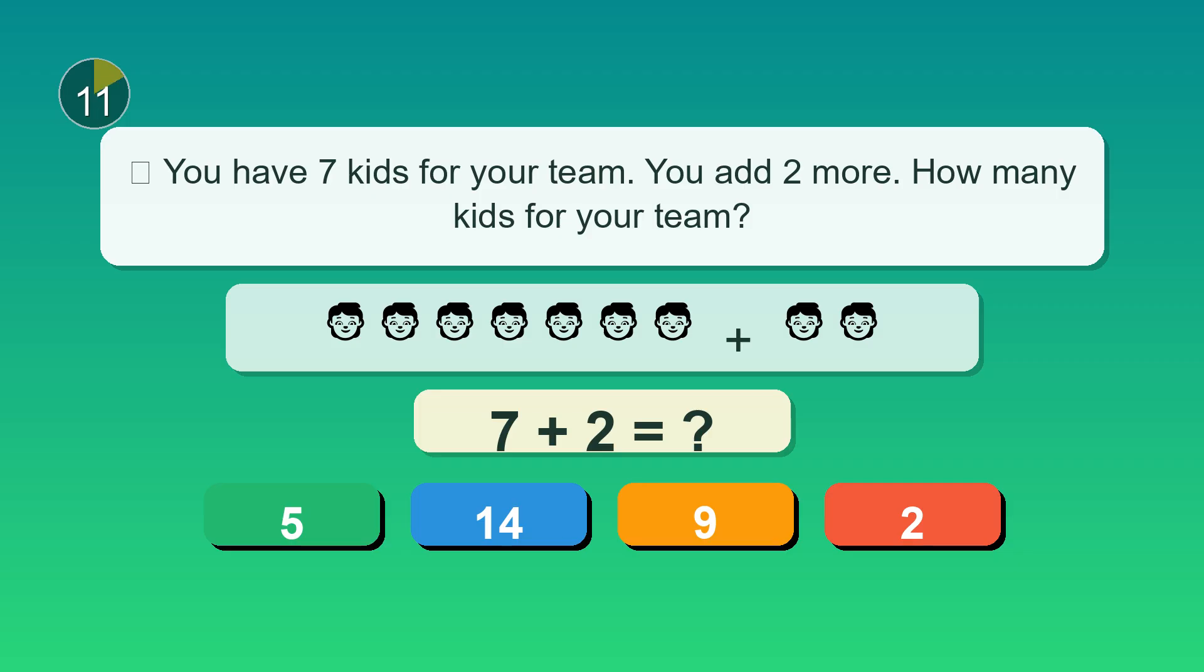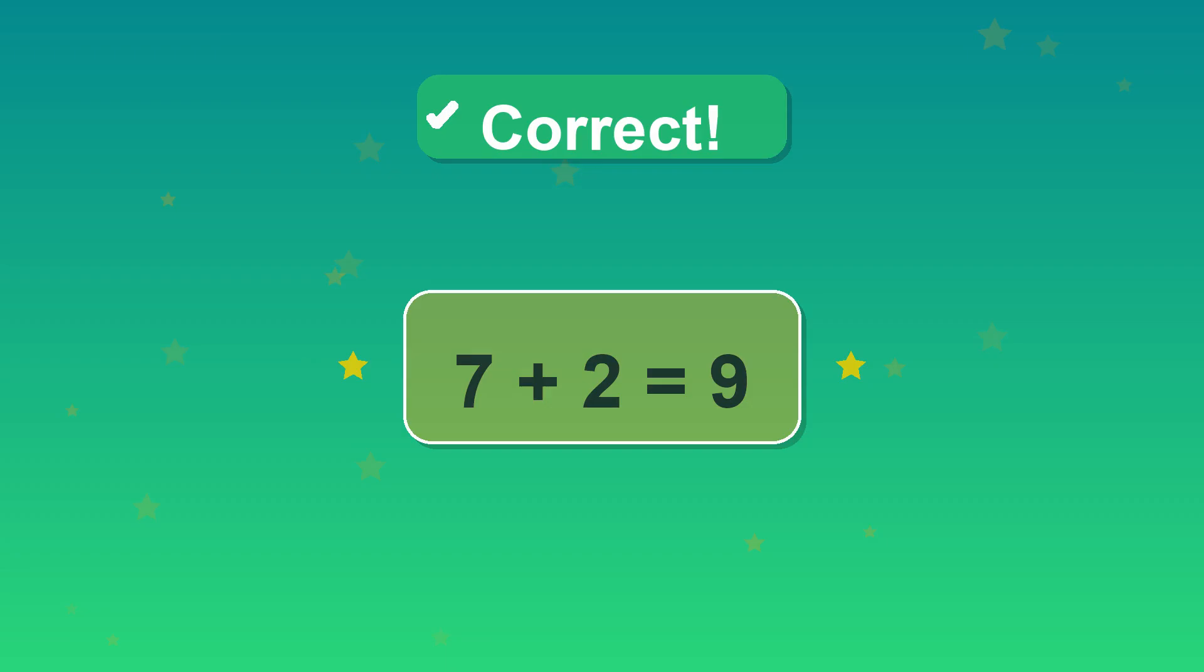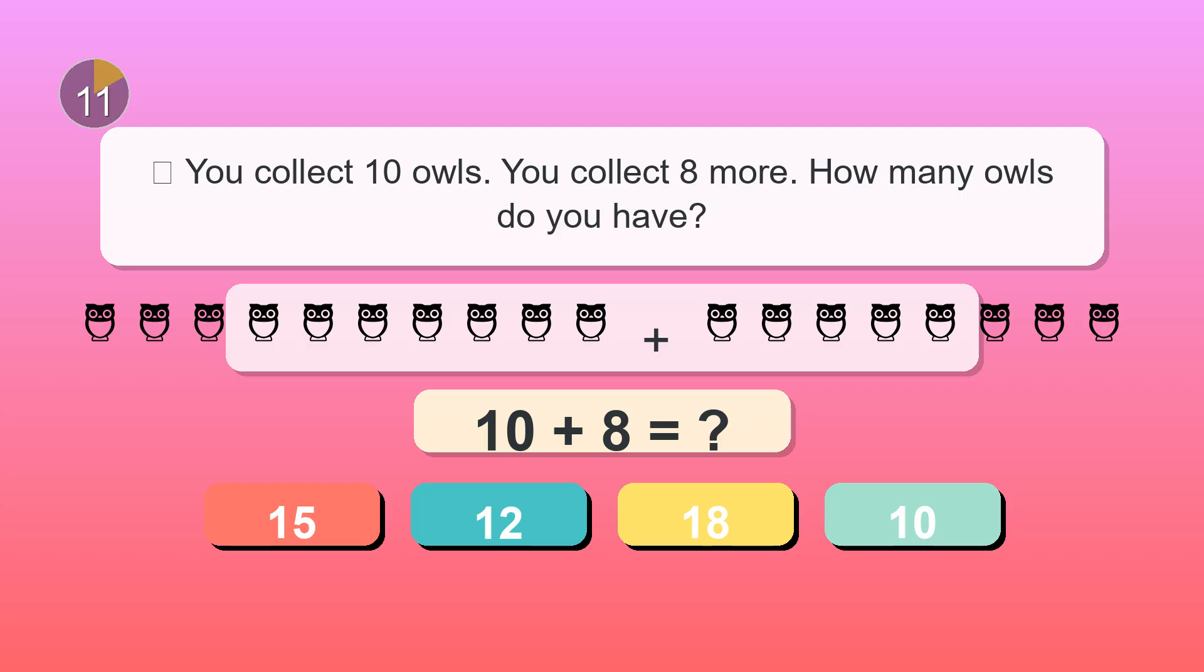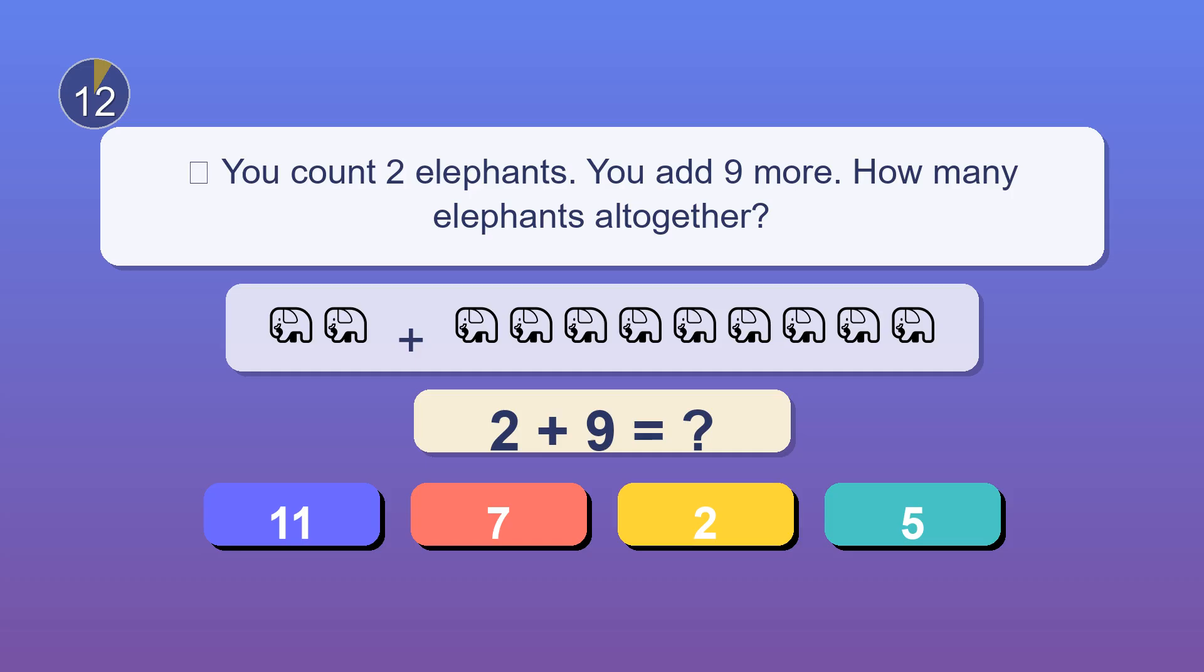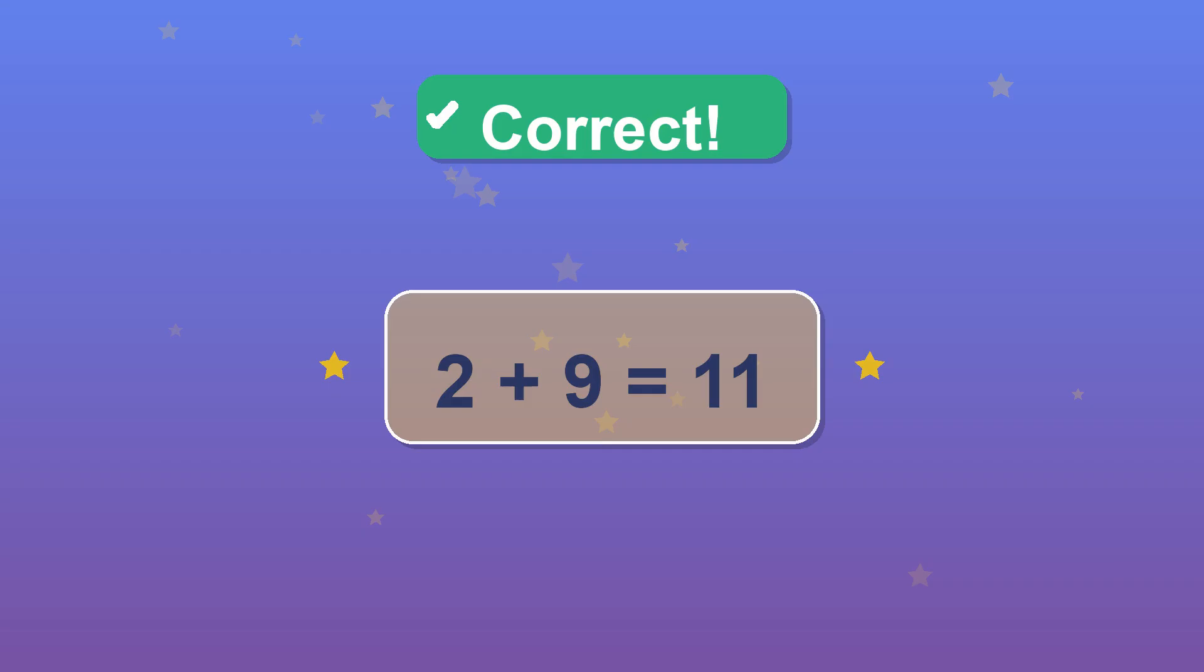You have seven kids for your team. You add two more. How many kids for your team? You collect ten owls. You collect eight more. How many owls do you have? Exactly. Eighteen. You count two elephants. You add nine more. How many elephants all together? 11. Great catch.